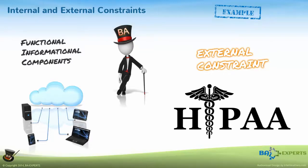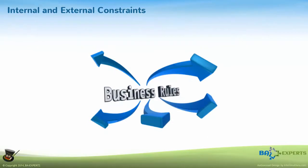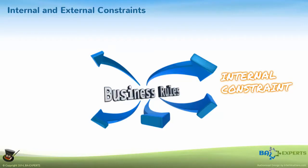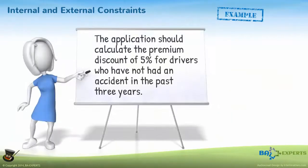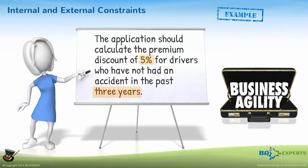In addition, your organization can define business rules or business policies — internal constraints. These are not subject to change by your project, and they also affect your functional and informational requirements. For example, an insurance company currently offers a 5% discount to drivers who have not had a traffic violation or accident within the past three years. The 5% and 3 years are both values subject to change at any time. You need to communicate to the solution providers that the business community needs to maintain these values without the need to modify the application's code.